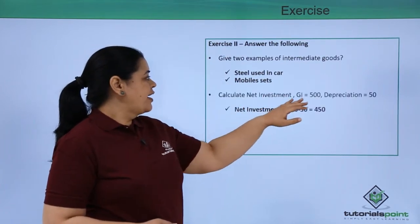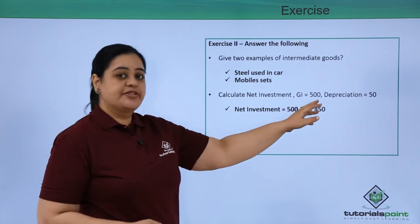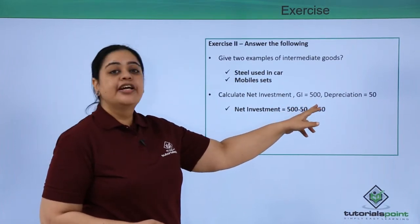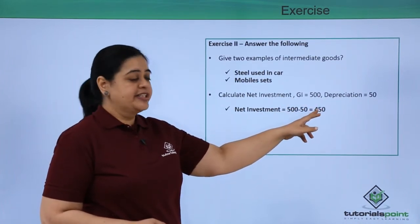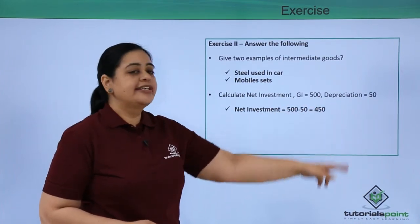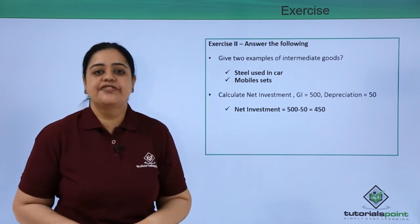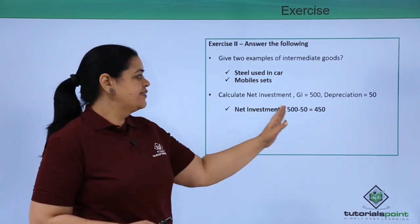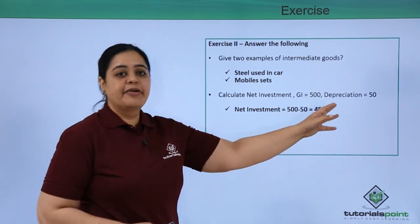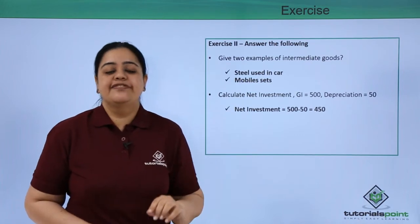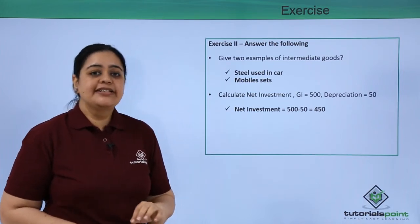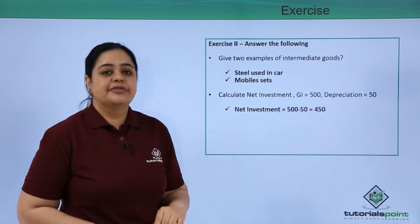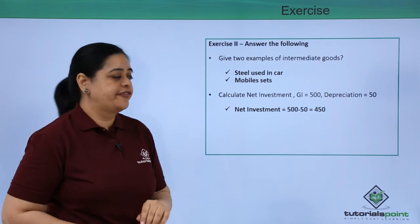Now we've been asked to calculate net investment, given gross investment as 500 and depreciation as 50. The formula is: net investment equals gross investment minus depreciation. So net investment comes to 450.